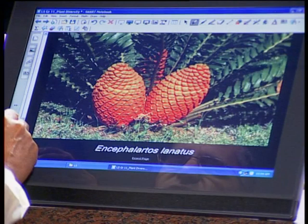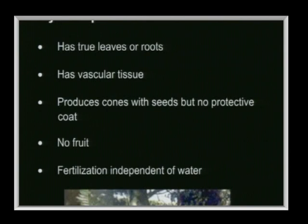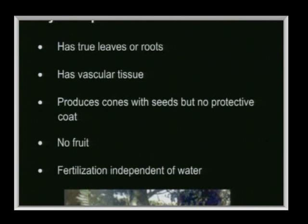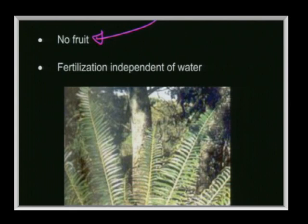To summarize the gymnosperms: they have leaves, roots, and stems; they have vascular tissue; they produce cones containing seeds. The key difference between gymnosperms and angiosperms is that the seeds of gymnosperms are naked — they don't have an ovary — and therefore no fruit develops. Pollination is by wind, which means fertilization is independent of water.